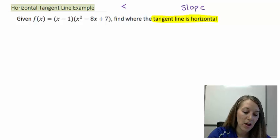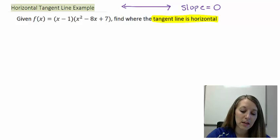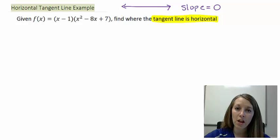Well, if we ever have a horizontal line, that means our slope, our rise over run, is defined to be zero. So we basically want to figure out when the slope of our equation is equal to zero.